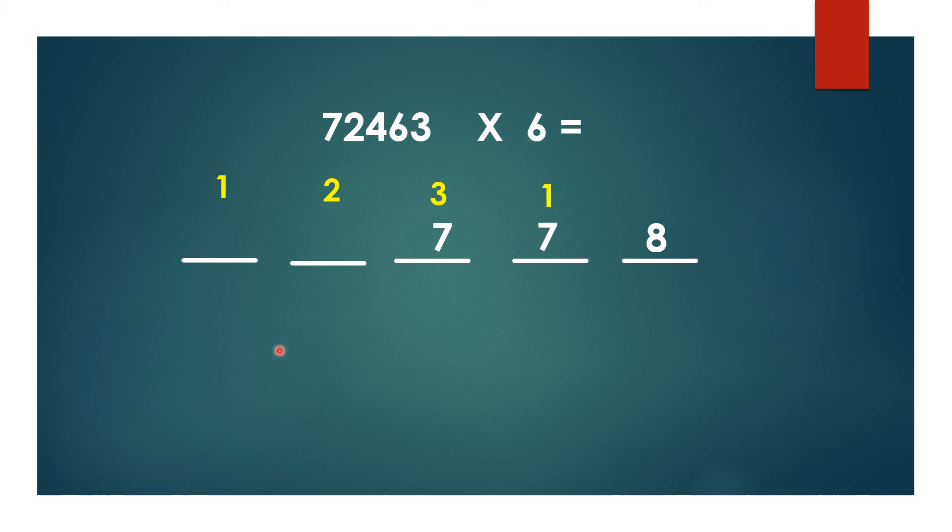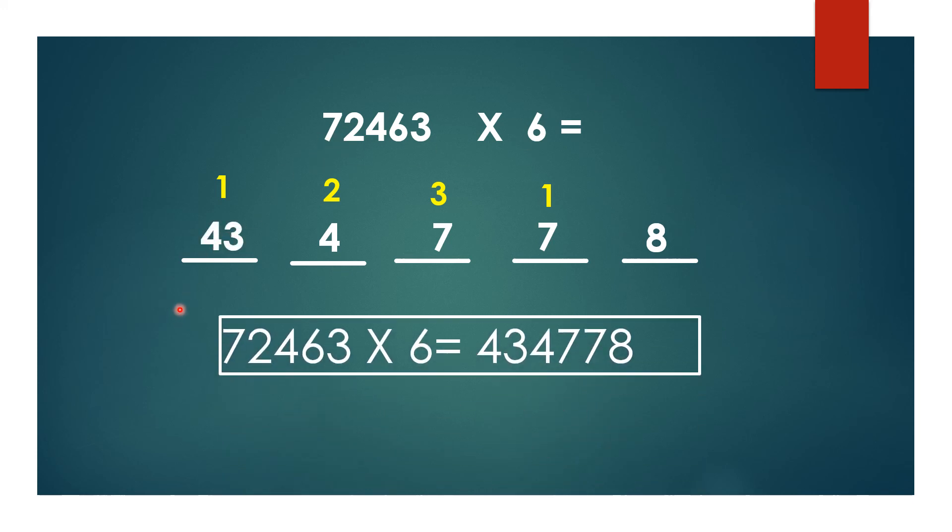So 1 as carryover and 4 here. The last term: 6 × 7 = 42, 42 plus 1 is 43. So the product of 72463 into 6 is 434778. In one direct step you can get the answer without any confusion.